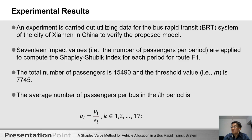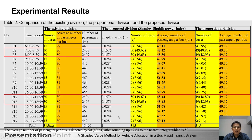An experiment is carried out using data from the bus rapid transit system of Xiamen city in China to verify the proposed model. The 17 impact values — that is, the number of passengers per period — are applied to compute the Shapley-Shubik power index for each time period for route F1. The total number of passengers is 15,419 and the threshold value M is 7,745. The average number of passengers provided in each time period is defined by this equation.